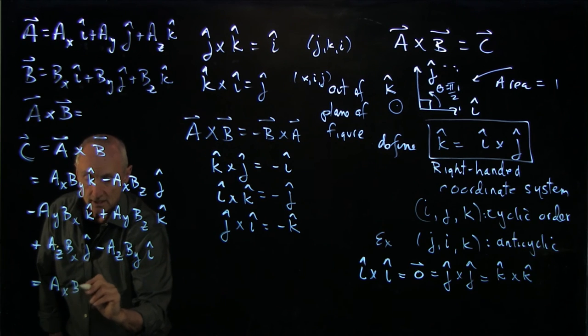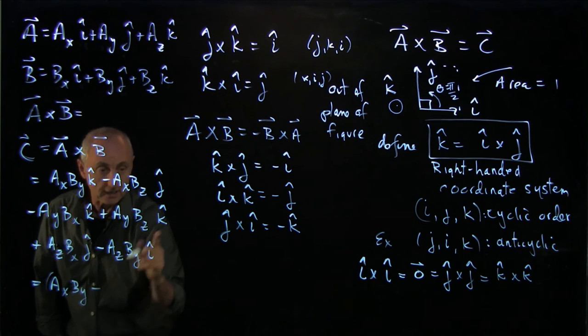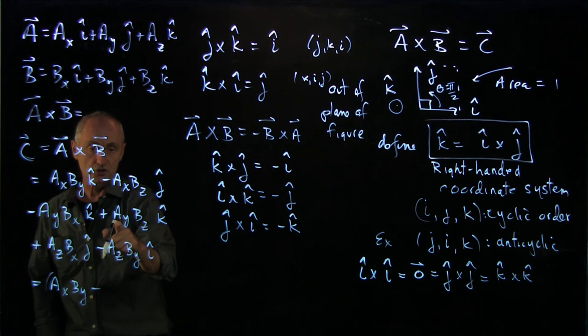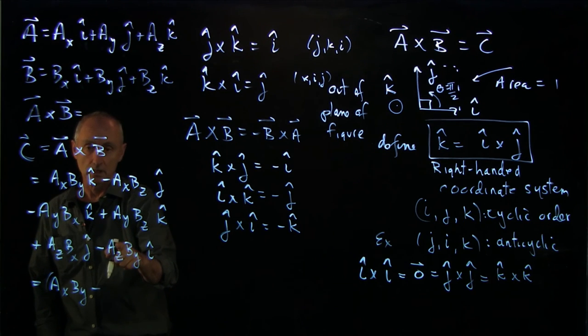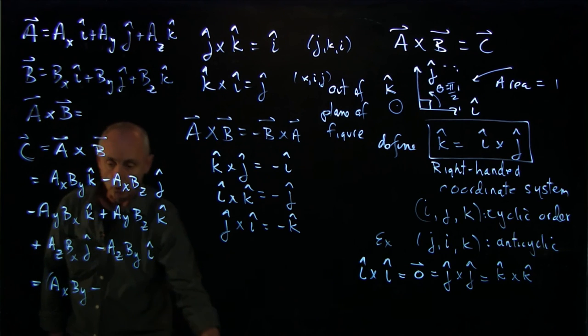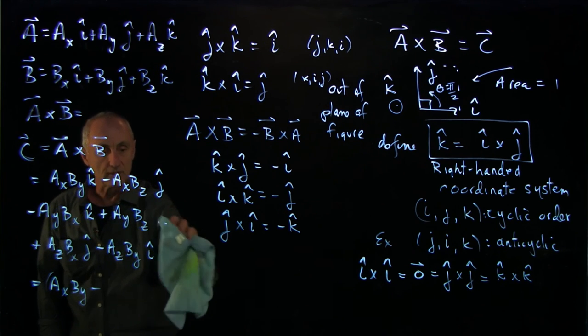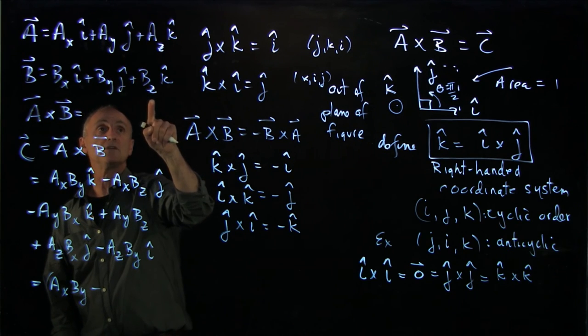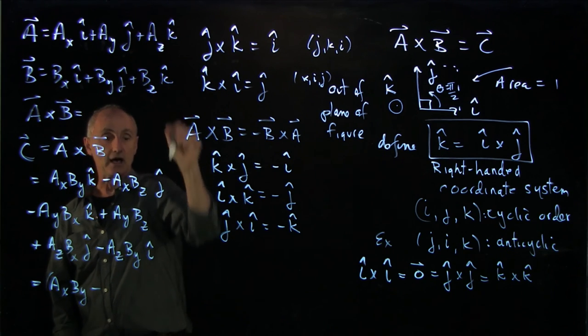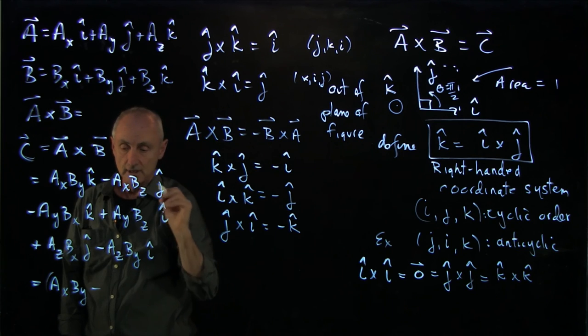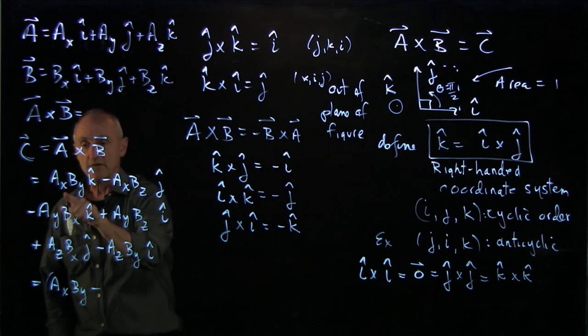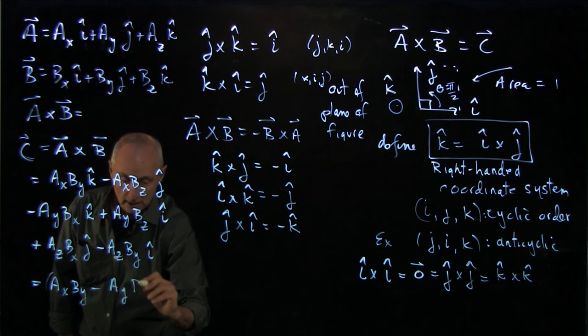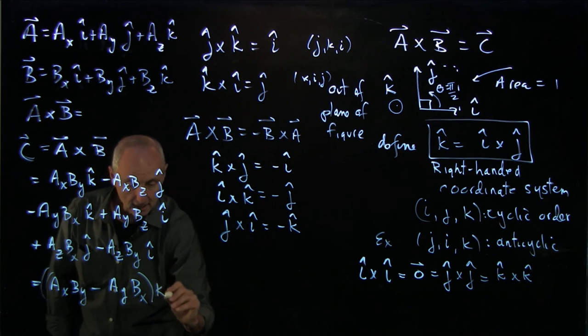Equal to ax by minus, oh, let's check this one. Here we use the wrong symbol here. We have to be a little bit careful here. ay cross bz is j hat cross k hat. That's plus i hat. So we have ax by minus ay bx k hat.